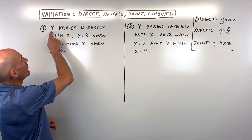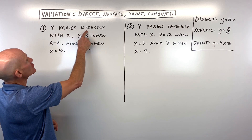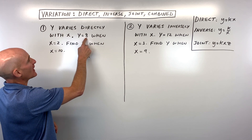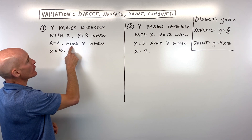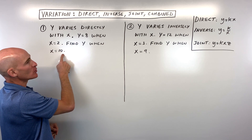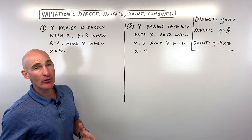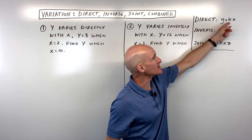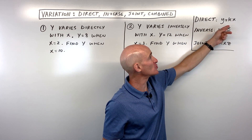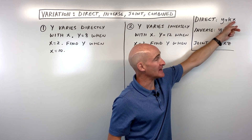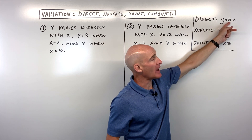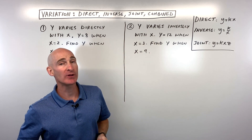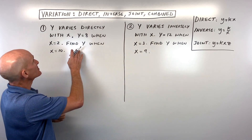For the first example, y varies directly with x. y is equal to 8 when x equals 2. Find out what y is when x is equal to 10. Our general form of a direct variation equation is y equals k times x, or some teachers will write this as y equals a times x. k or a is your constant of variation.